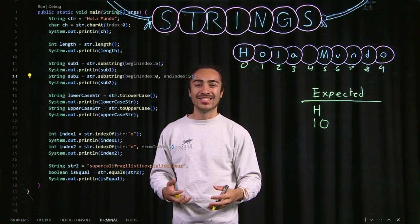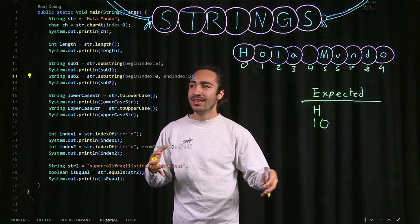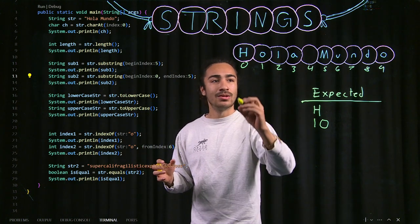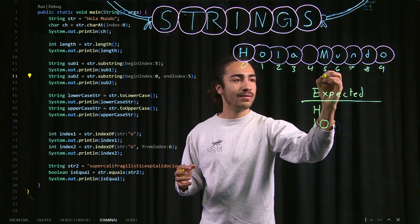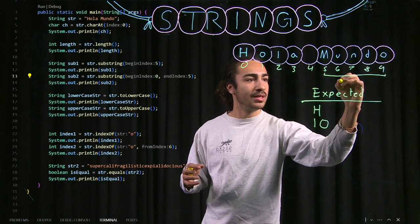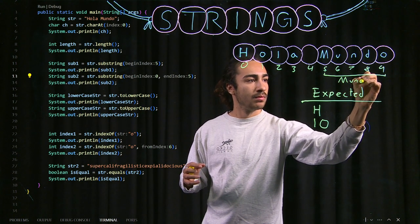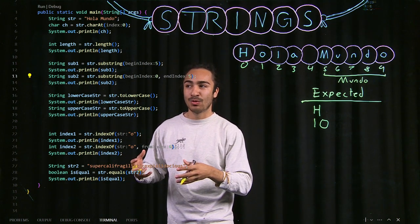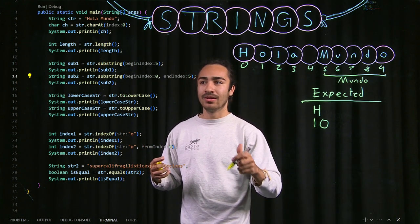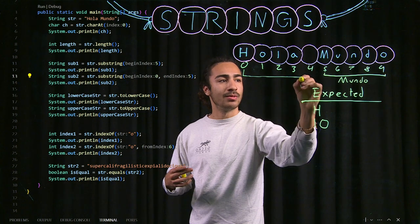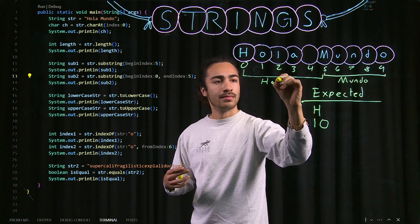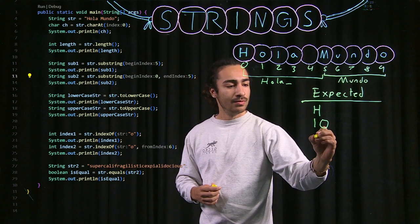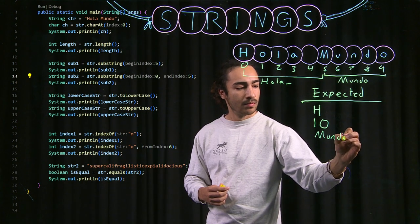And then, for substring, it's exactly what it sounds like. It's just a substring of your original string. The parameters that I give it would be the beginning index. If you just give it the beginning index, it would go from, let's say if I put 5, it would go from 5 all the way to the end of the string, which would be Mundo. However, if I give it a beginning index and an end index, it would go from that first parameter all the way to the second parameter. If I give it 0 and 5, it would go from 0 all the way to 5, which would be Hola and also a white space. Our outputs here would be Mundo and Hola.